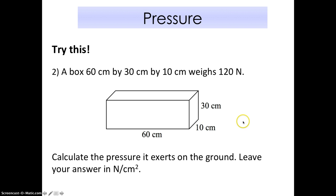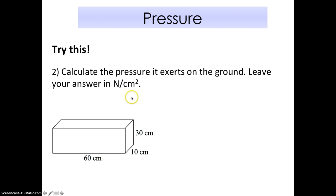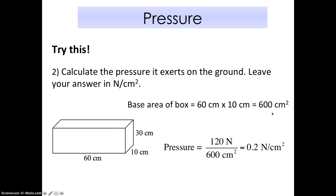You should finish calculating, let's check the answer. Calculate the base area of the box first. You take 60 times 10, you get 600 cm square or 600 square cm. Now pressure equals force divided by area. 120 newtons is my weight divided by my area. I get 0.2 newton per square cm. That's the answer. Check if you got it correct.